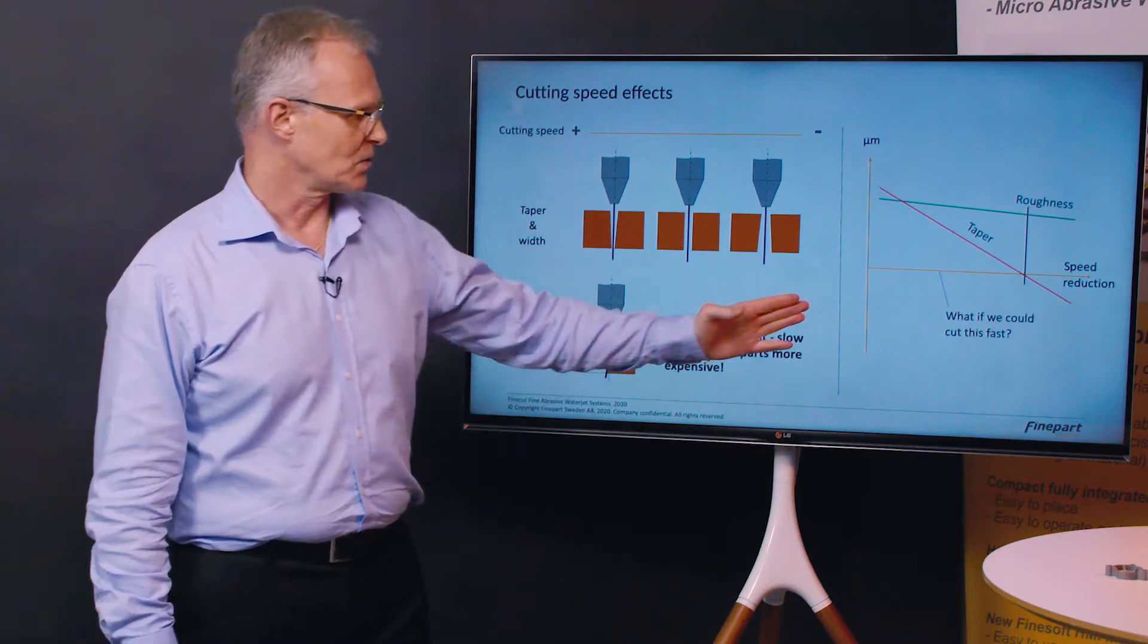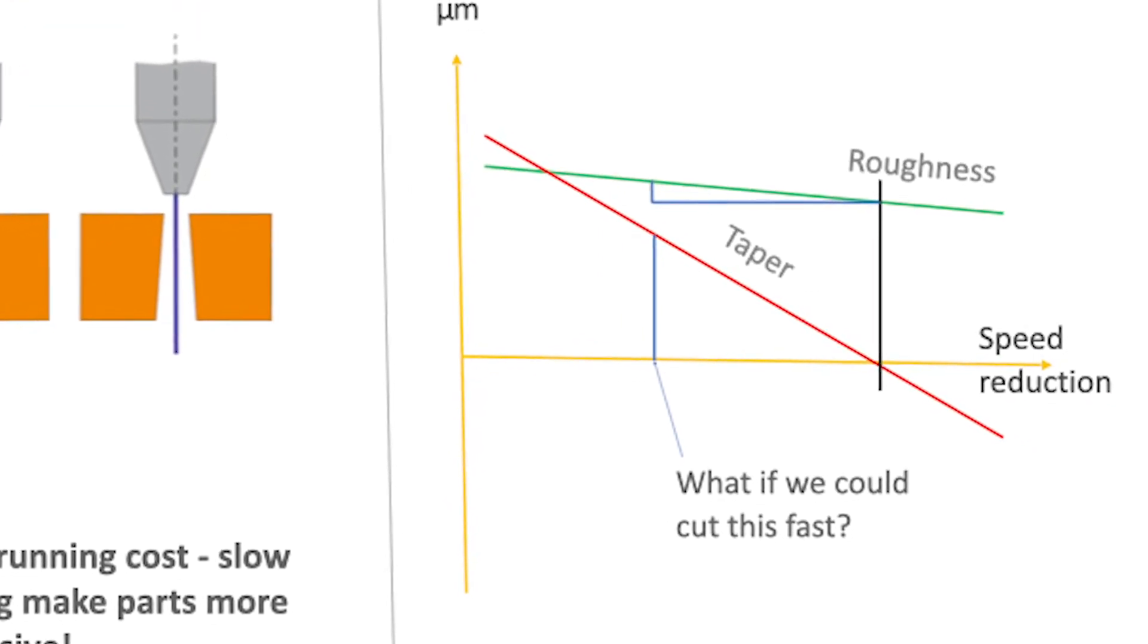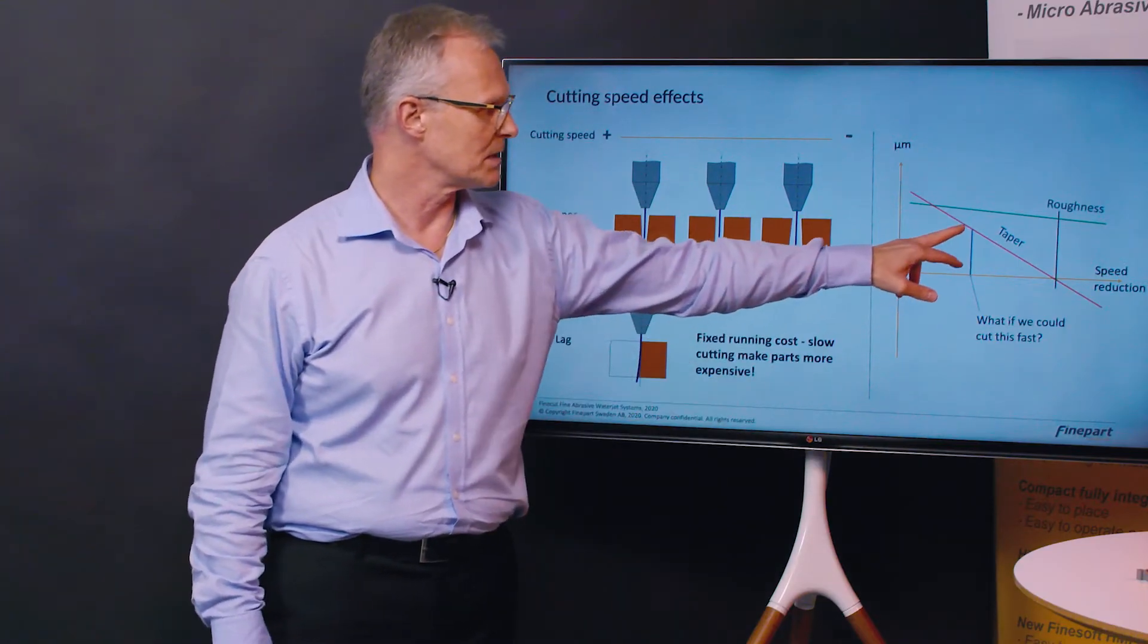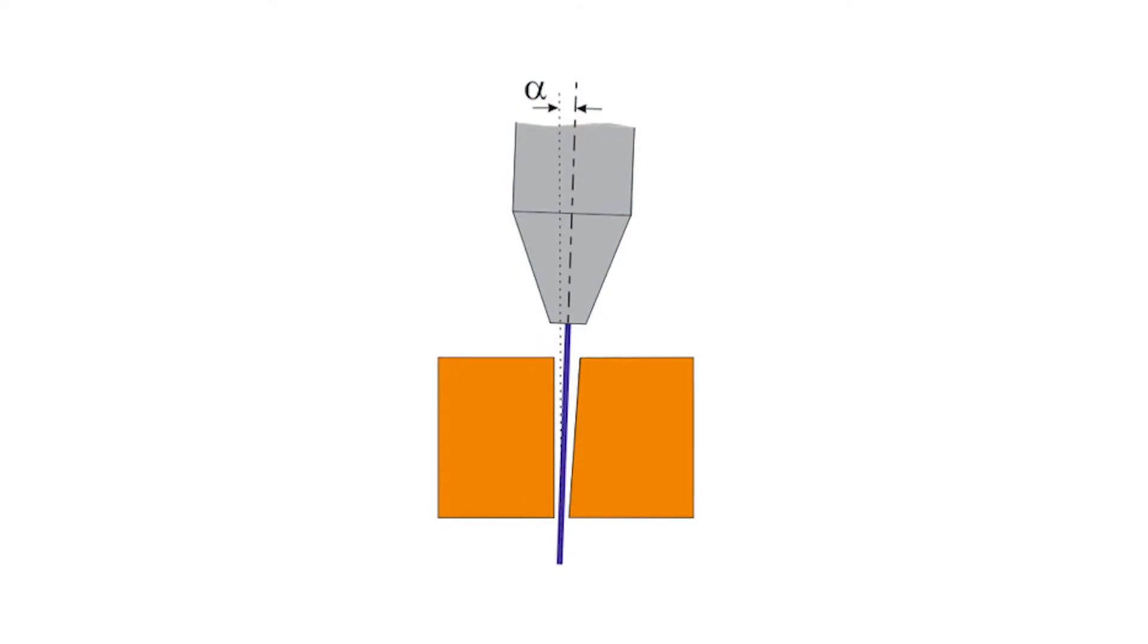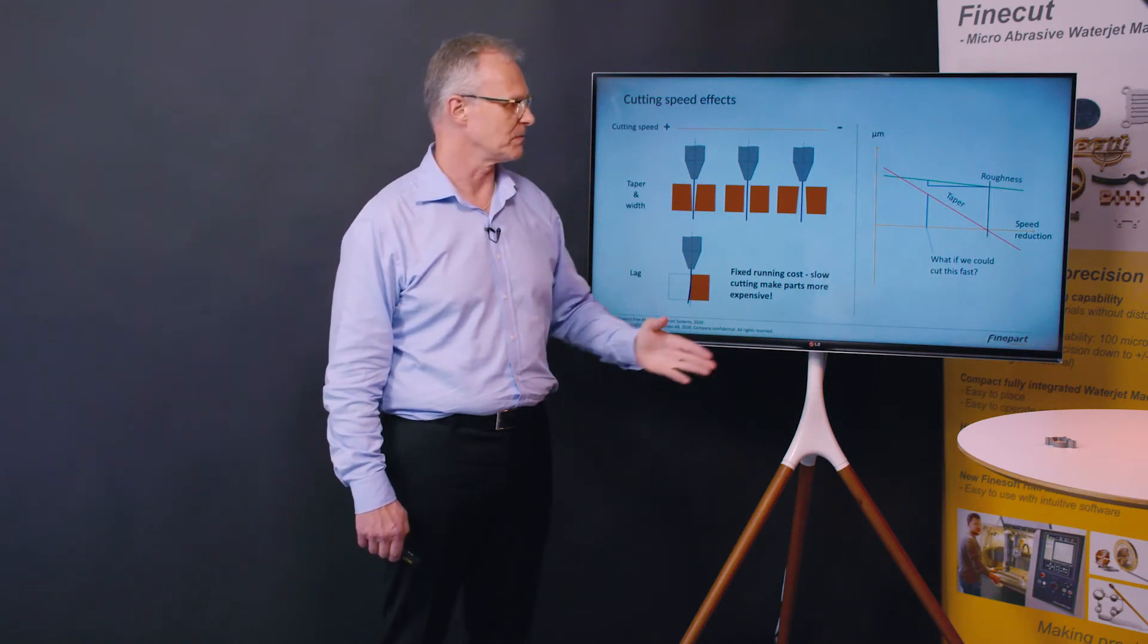What if we could go this fast? If we can have a database saying how much taper we have at a specific speed we could compensate for this taper. This would mean that we would lose a little bit of the roughness quality but still we would be able to maintain tolerances.